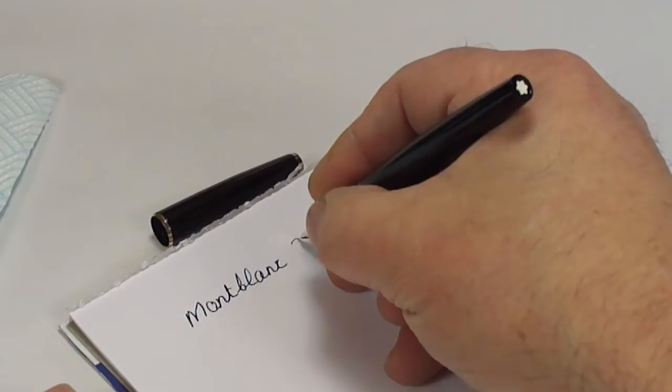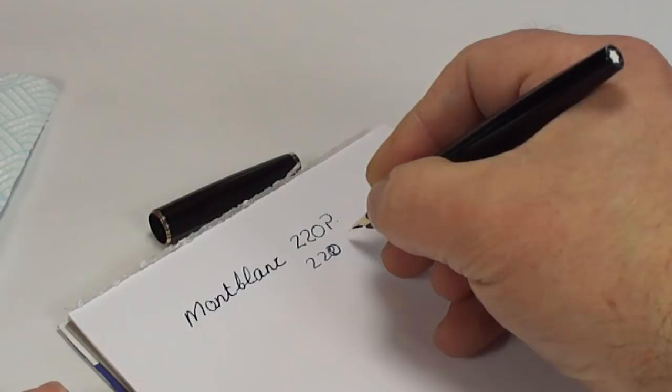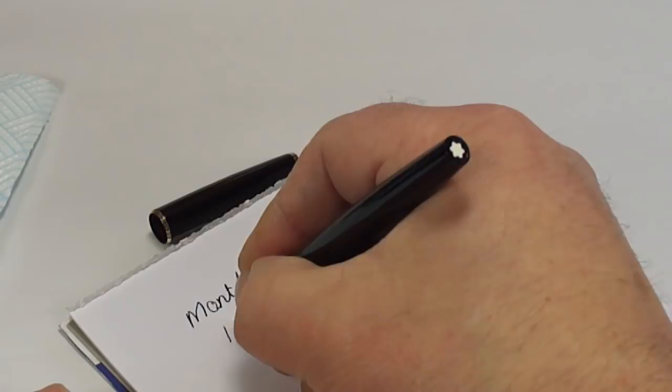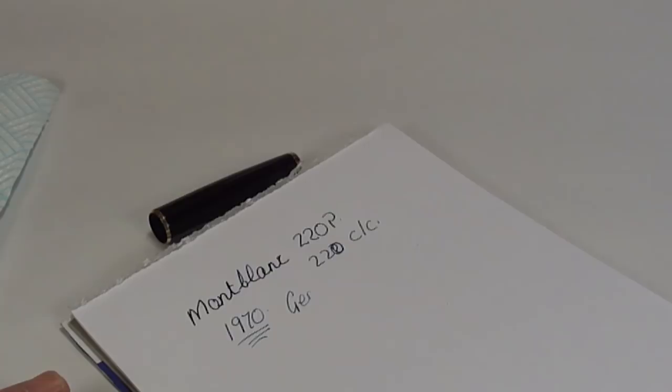Sometimes it's known as the 220 CC or cartridge converter. As we said, we're dating this pen from in the regions of the 1970s. It's made, let's dip it again. It's made in Germany. Okay.